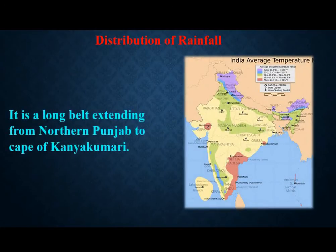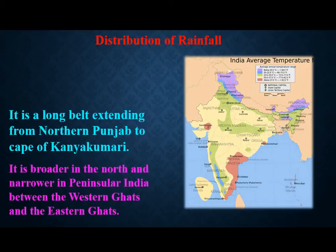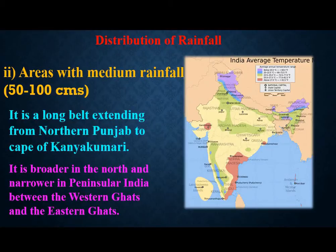The medium rainfall area is a long belt extending from Northern Punjab to Cape Kanyakumari — it is broader in the north and narrower in the peninsula. This belt runs between the Western Ghats and the Eastern Ghats. Average rainfall here means 50 to 100 cm. It's not beyond that — areas with medium rainfall receive 50 to 100 cm, not high and not low.